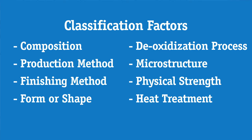Different types of steel can also be classified by a variety of different factors such as composition, production method, finishing method, form or shape, deoxidization process, microstructure, physical strength, and heat treatment.